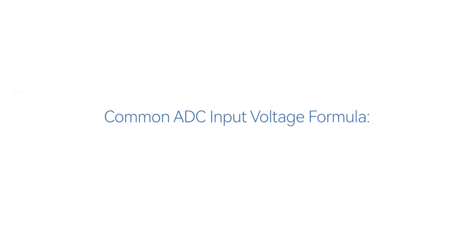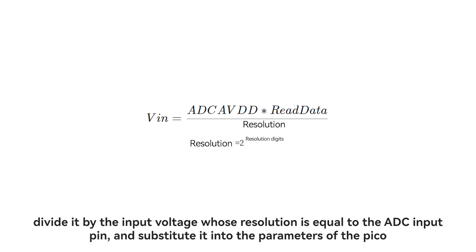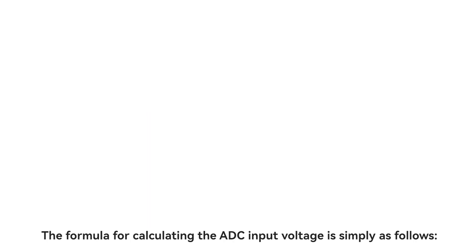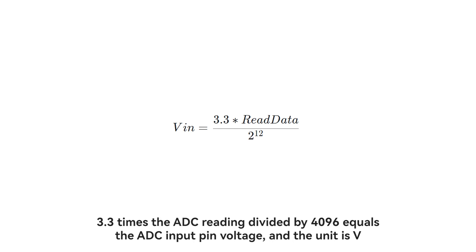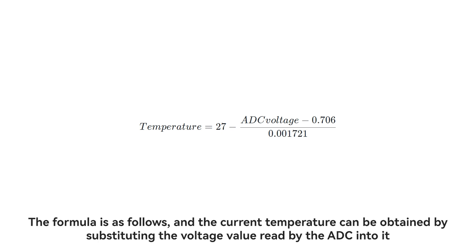Common ADC input voltage formula: Multiply the reference voltage by the value read by the ADC, divide it by the resolution to equal the ADC input pin voltage. Substitute it into the parameters of the PICO. The formula for calculating the ADC input voltage is simply: 3.3 times the ADC reading divided by 4096 equals the ADC input pin voltage, and the unit is V. Here we need to know the formula of the official on-chip temperature sensor by the way. The current temperature can be obtained by substituting the voltage value read by the ADC into it.